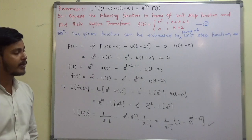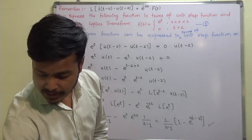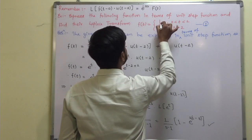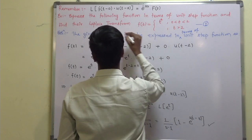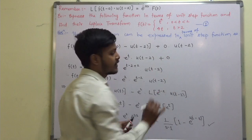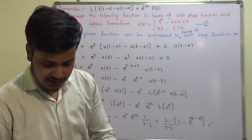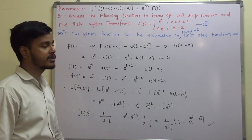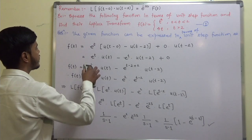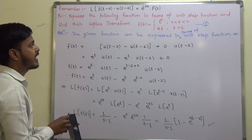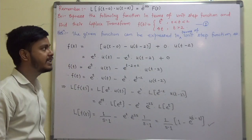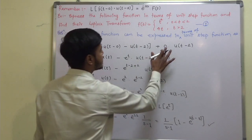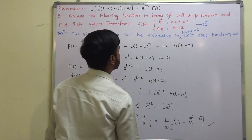Now let us take one more problem. Express f(t) in terms of the unit step function and find its Laplace transform. The problem has f(t) = t² for 0 to 2, and 4t for t greater than 2. As usual, the given function can be expressed in terms of the unit step function. We have t² · u(t) for the first piece, and 4t for the second.